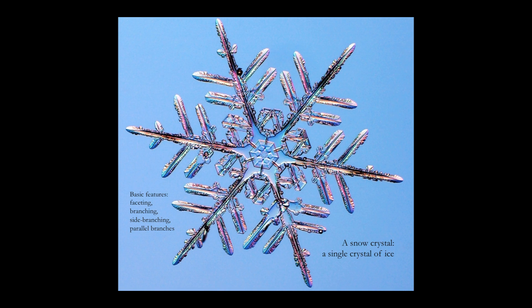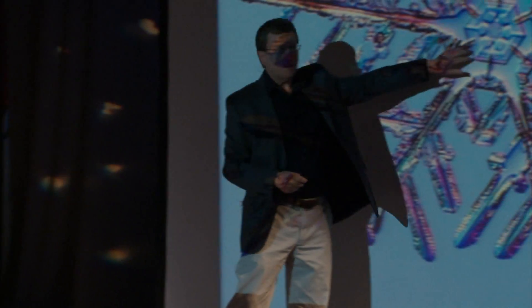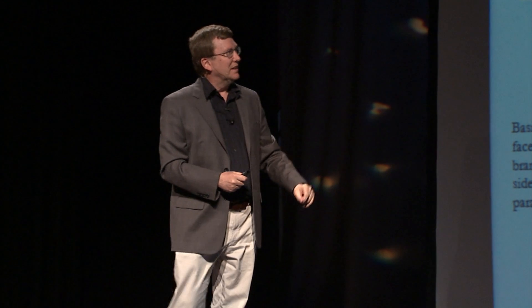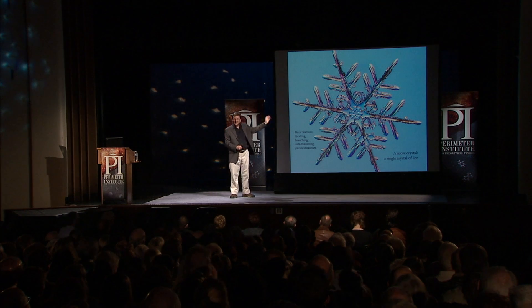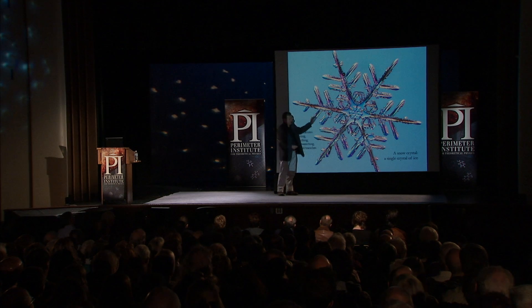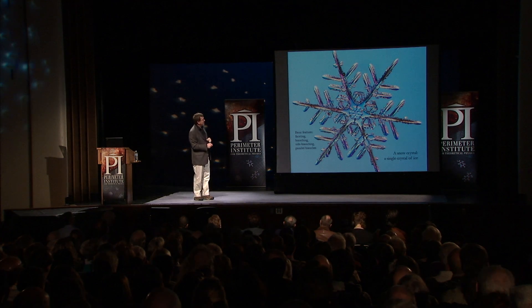Here's a nice example of a snowflake. You can see the basic features: there's a little hexagon right there — that's how it started. Then it sprouted branches, and then side branches formed in all six arms at the same time. You can also see why the branches are parallel — the directions that the arms grow in has to do with the underlying crystal symmetry. It's a single crystal, so all the molecules are lined up in the same direction throughout.